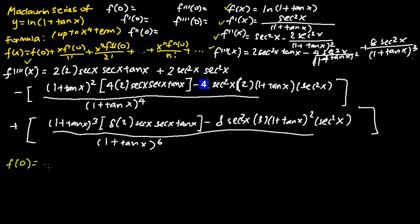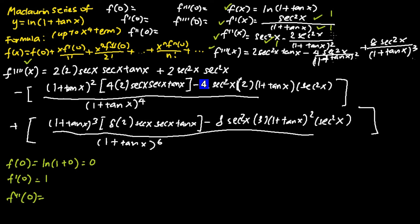We start with f(0): substituting x equals 0 into f(x) gives ln(1 plus tangent 0) equals ln(1) equals 0. For f'(0), the numerator is 1 and denominator is 1, so f'(0) equals 1. For f''(0): the first term gives 1, the second term has numerator negative 2 and denominator 1, so f''(0) equals 1 minus 2 equals negative 1. For f'''(0): the first term is 0 due to tangent x, the second term is negative 4, and the third term is positive 8, so f'''(0) equals 4.